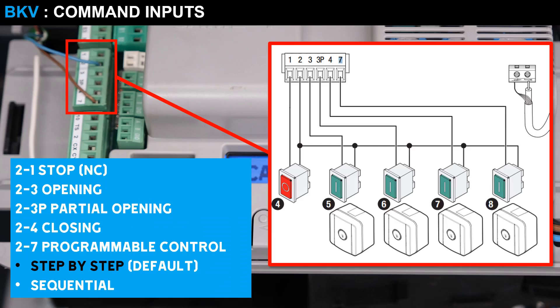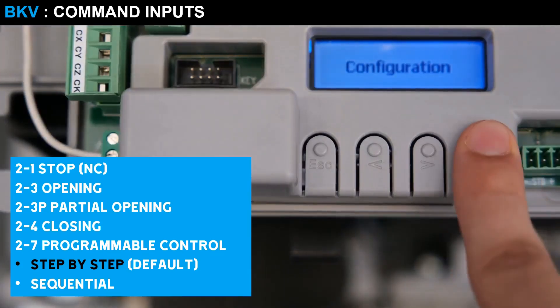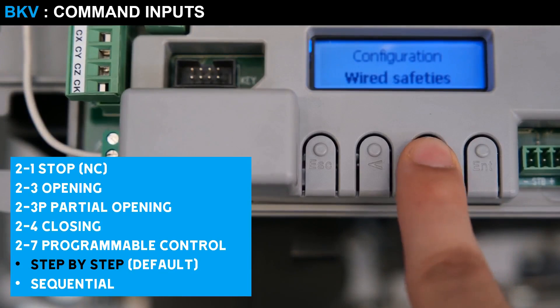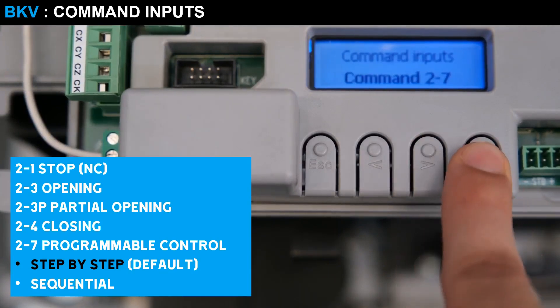To control the gate, you can use one or more of the five command inputs: stop, opening, partial opening, closing, and programmable command. In case of using inputs two and seven, it will be necessary to configure the type of command between step-by-step and sequential.